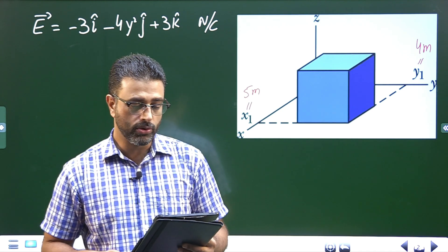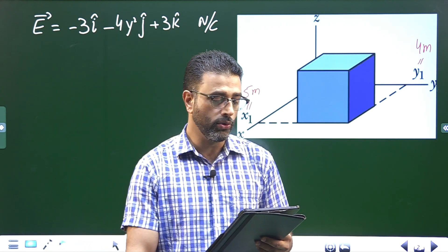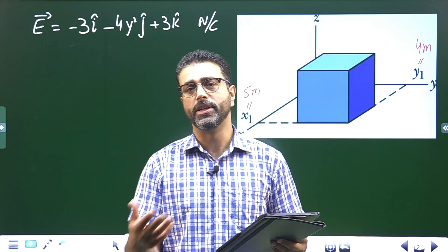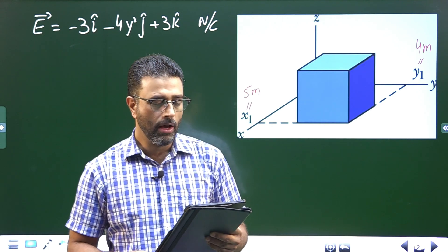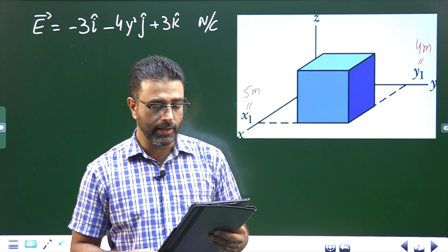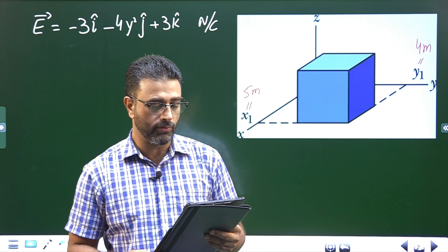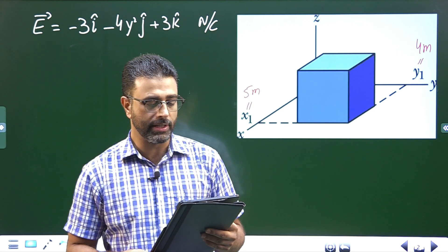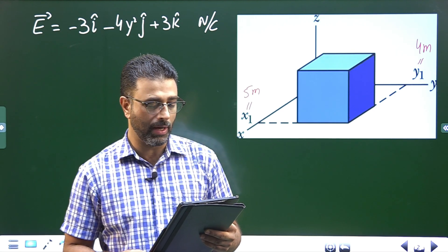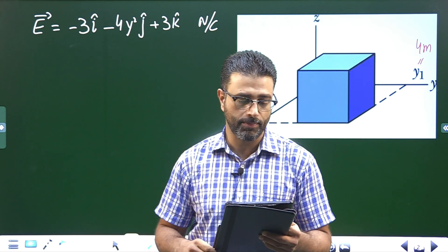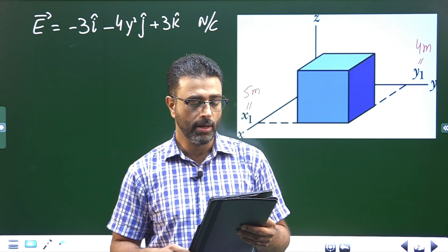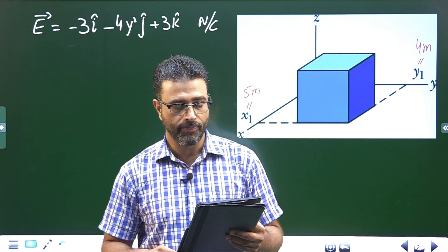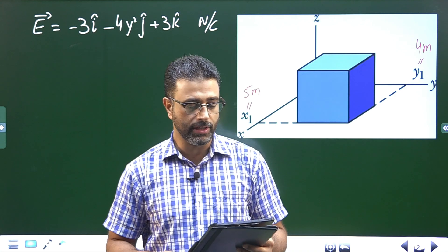The figure shows a closed Gaussian surface in the shape of a cube of edge length 2 meters, so the area of each face is 4 square meters. One corner is at x₁ = 5 m and y₁ = 4 m. The cube lies in a region where the electric field vector is given by E = −3i − 4y²j + 3k N/C, with y in meters. We have to find the net charge contained in the cube.